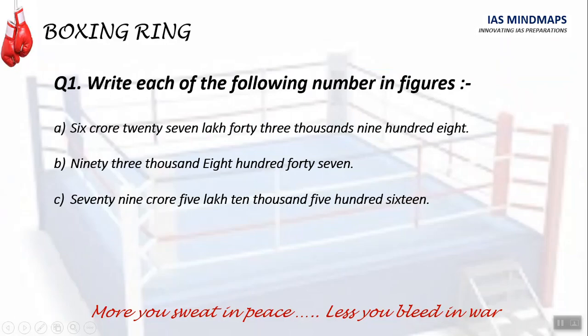Now let's get into the boxing ring. Write each of the following numbers in figures. A. 6 crore, 27 lakh, 43,908. B. and C. Please pause the video and solve this.